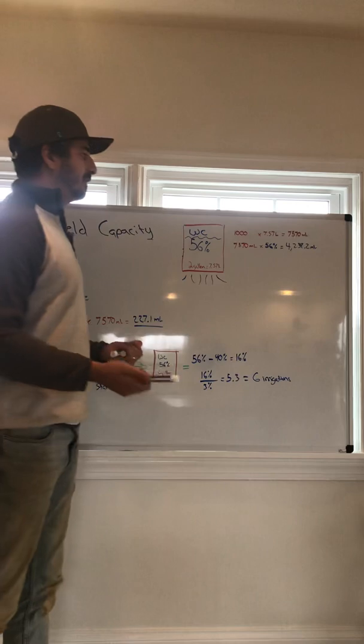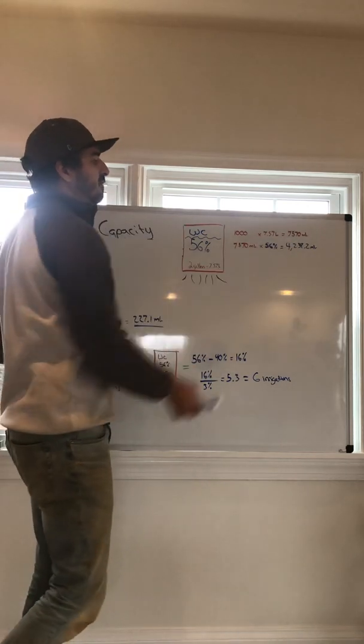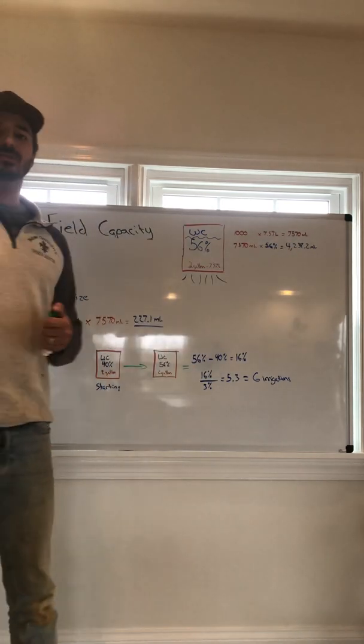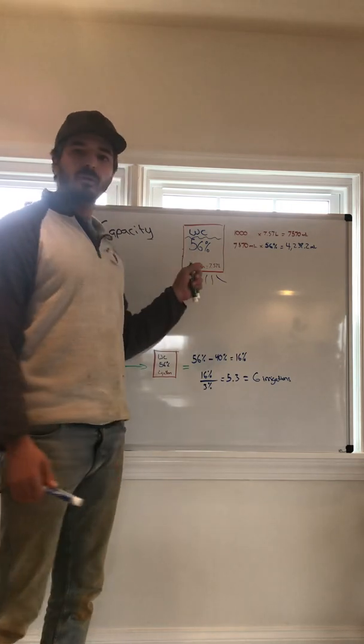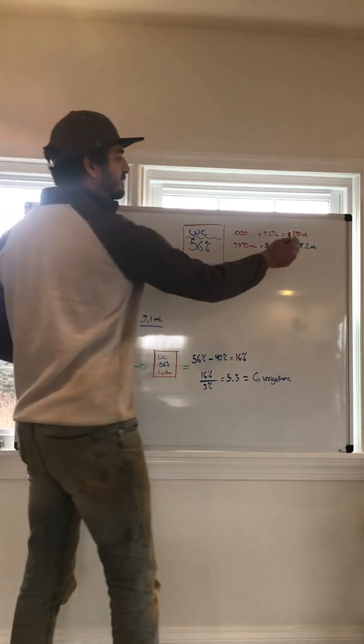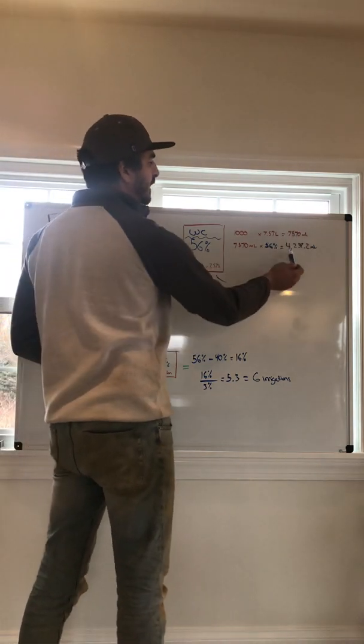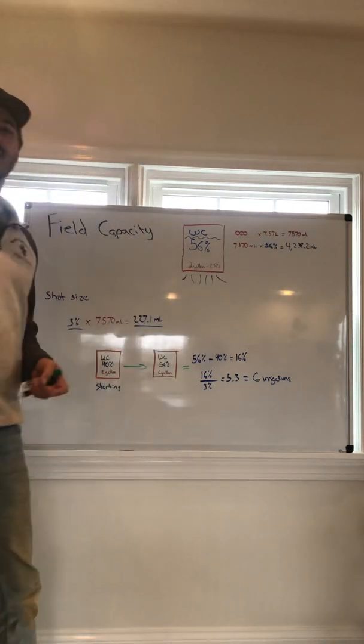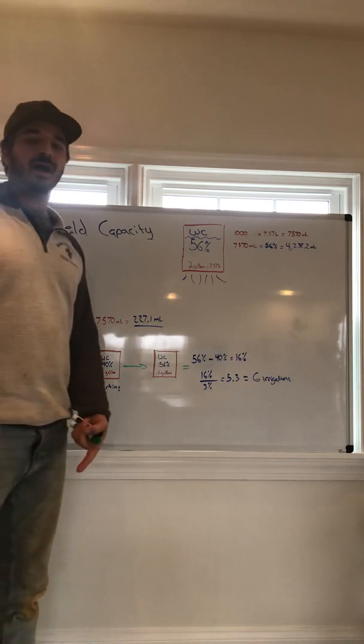So how do you check this? If you took 7,570 milliliters of water and you poured it into that two-gallon bag, you would then see the difference of 7,570 minus 4,239. That would be what ran out the bottom.